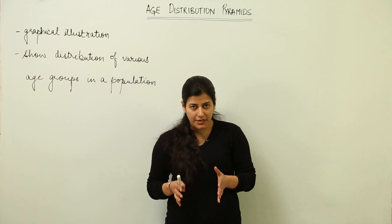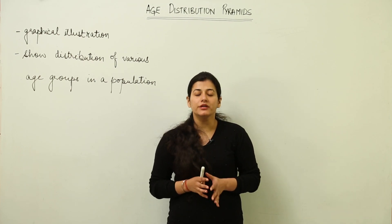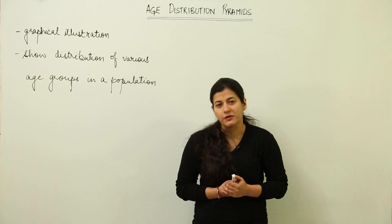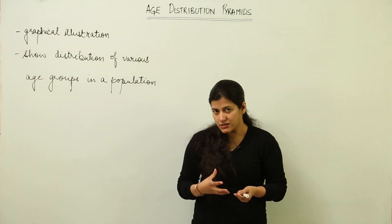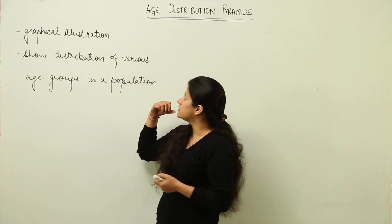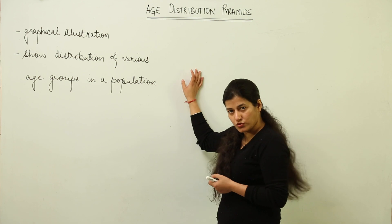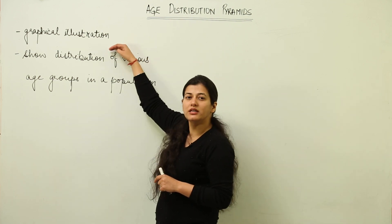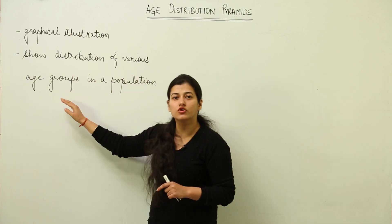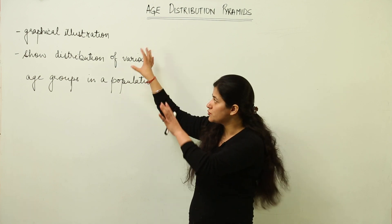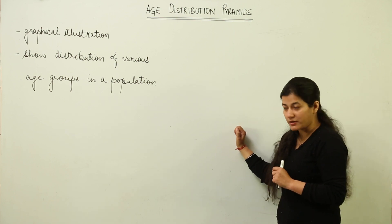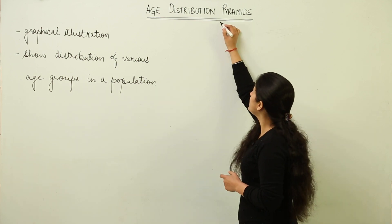After understanding birth rates and death rates, we are going to understand the age distribution pyramids. The age distribution pyramid is a graphical illustration that shows the distribution of various age groups in a given population. These two points are to be remembered — this is the definition of age distribution pyramid.